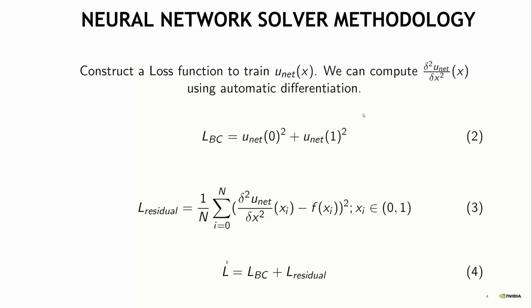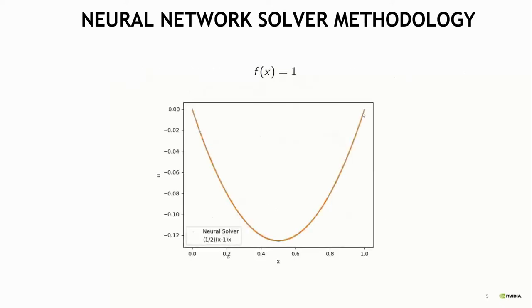Essentially what you're doing here is you're training the network directly on the governing equations without any additional data. If you compare it with a traditional deep learning method, the data samples are just sample points in your domain, sample coordinates, and the labels are just zero because the governing equation residuals should be zero.